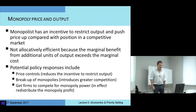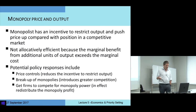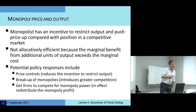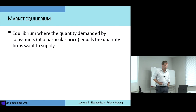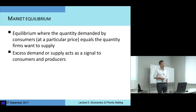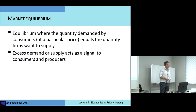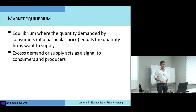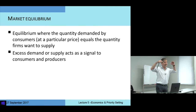Sometimes we induce price control, sometimes we break up monopolists, and sometimes we sell people the right to be a monopolist as a way of trying to capture back some of the benefit. Market equilibrium is where the quantity demanded by all consumers at a particular price is just equal to the quantity firms want to supply. If there's an excess demand — if total demand is greater than supply — that acts as a signal to producers that there's an opportunity to make money by selling more, and in particular by raising price. If there's an excess supply — if producers find they can't sell all their goods — it acts as a signal to lower the price.